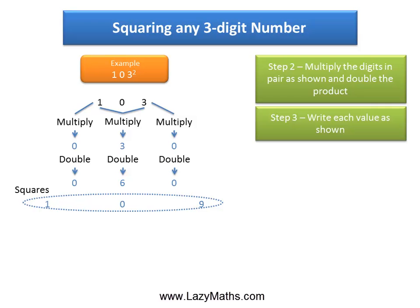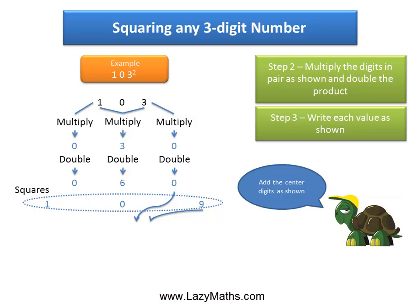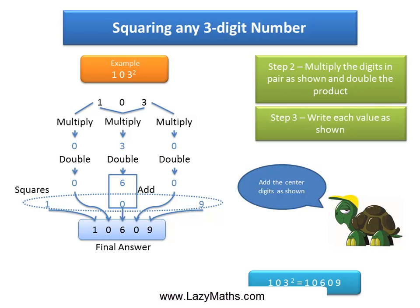And then we start putting in each of these values as shown. So the 9 goes in as 9, 0 as 0. And then the center digits, 0 and 6, need to be added: 6 plus 0 is 6. And then the 0 and the 1 on the left sides go in as is. So we get the final answer as 10,609.